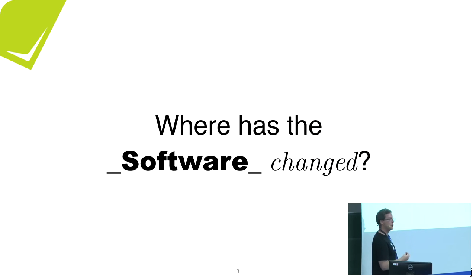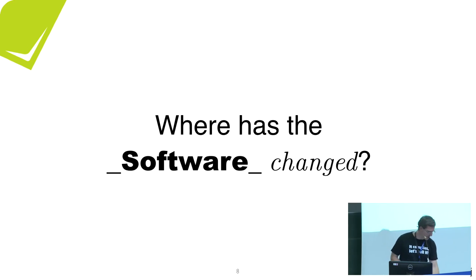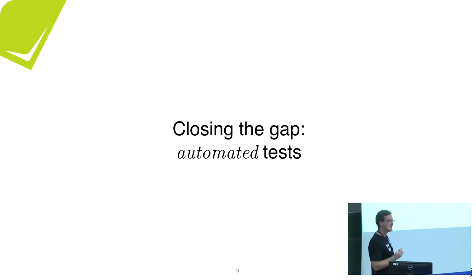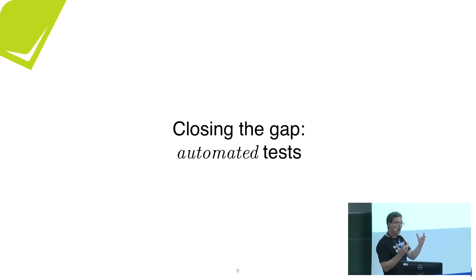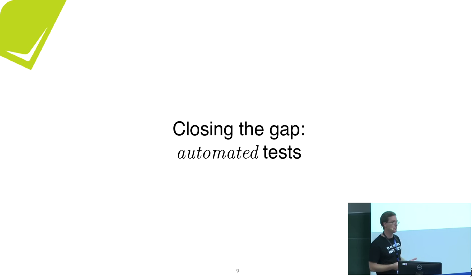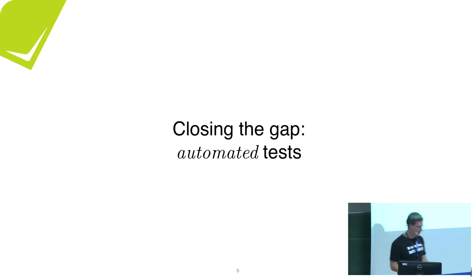What you want to know is where the software has changed, but Git only tells you where the code changed. Tests close that gap — tests turn the dynamic runtime of the software into a static artifact in the code that you can then govern by version control. This is why you have to execute the test in order to do that.